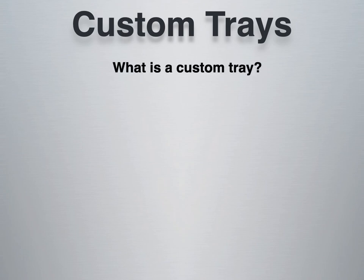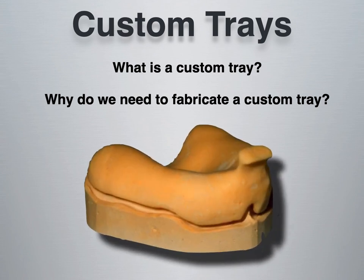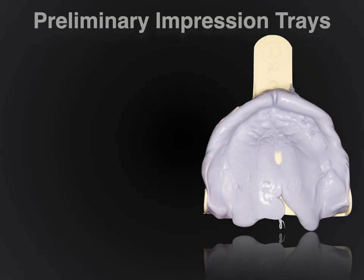So what is a custom tray and why do we need to fabricate one? Here we have an image of what a custom tray may look like — this one is made out of cold-cure acrylic. When we look at a preliminary impression, what we see is a plastic stock tray. These prefabricated trays are made to fit everyone moderately well, but will not fit everyone. The plastic ones are adaptable — you can apply heat to stretch or morph them — but the length of the borders and things of that nature are not custom to each individual patient.